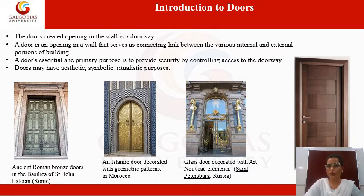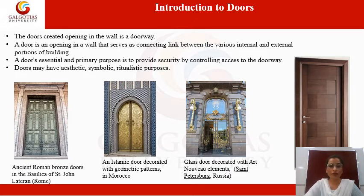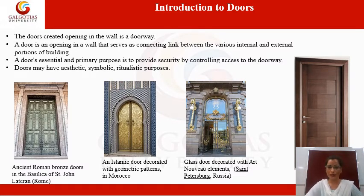The fourth example shown is a modern style door. These are some different types of doors, and you can see the various types and designs. Doors can be made from different types of materials — wood, steel, iron, glass, and so on.